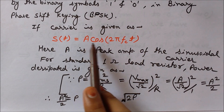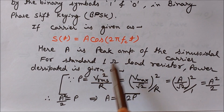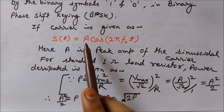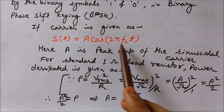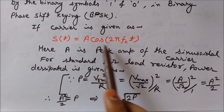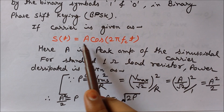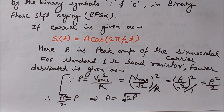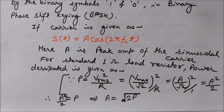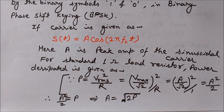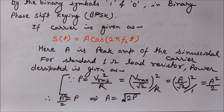Since we use a product modulator, it multiplies the b(t) signal by √(2P) cos(2π fc t), giving the final BPSK output waveform: s(t) = b(t) · √(2P) cos(2π fc t). This is the final equation of BPSK. That was all about the block diagram and the generation of BPSK signal. For more videos, subscribe to the channel Engineering Made Easy, where we will discuss more digital modulation techniques.